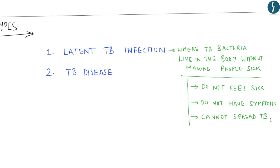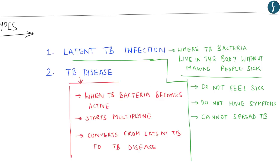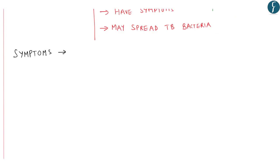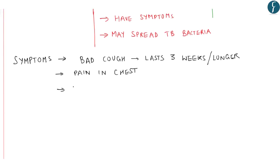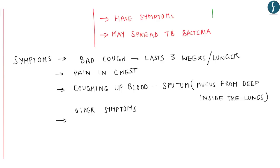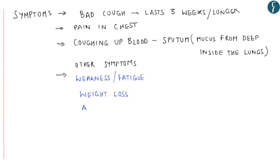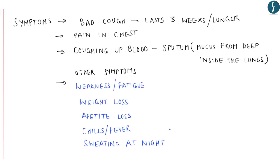If the TB bacteria becomes active in the body and starts multiplying, the person will go from having latent TB infection to being sick with TB disease. People with TB disease have symptoms and may spread the bacteria to others. TB bacteria most commonly grow in lungs and cause symptoms such as a bad cough lasting three weeks or longer, pain in the chest, coughing up blood or sputum. Other symptoms include weakness or fatigue, weight loss, appetite loss, chills, fever, and sweating at night.